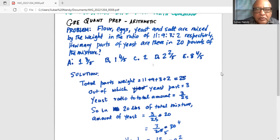So 11 parts of flour, 9 parts of eggs, 3 parts of yeast, and salt is taken in 2 parts.